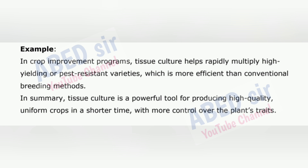In crop improvement programs, tissue culture helps rapidly multiply high-yielding or pest-resistant varieties, which is more efficient than conventional breeding methods. In summary, tissue culture is a powerful tool for producing high-quality, uniform crops in a shorter time, with more control over the plant's traits.